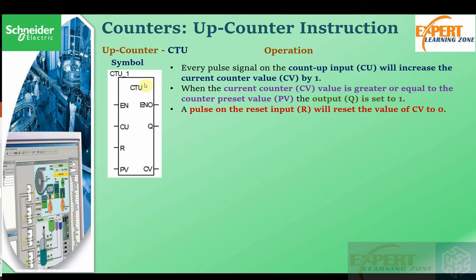Every pulse signal on the up counter input will increase the counter value by one. A pulse signal on the count-up pin will increment the current counter value (the CV value) by one. When the current counter value is greater than or equal to the preset value, the output is triggered - the output becomes one. A pulse on the reset input will set the current counter value to zero - a pulse from zero to one on this pin makes this value become zero.